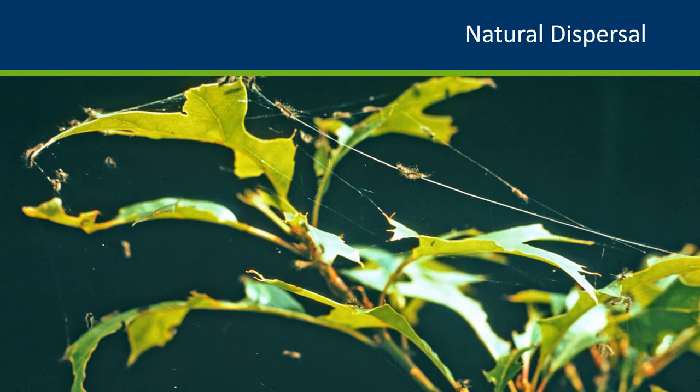One way the Gypsy Moth can naturally disperse is through its silk thread. If you look at this image there are multiple caterpillars on the silk lines here. These caterpillars hatch out, can climb to the top of trees to begin feeding, and put out this silk web and be carried on the wind further into new trees and new food for their growth.